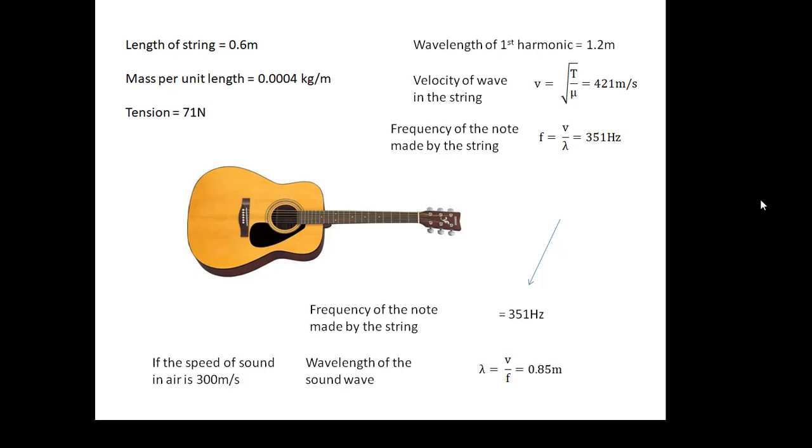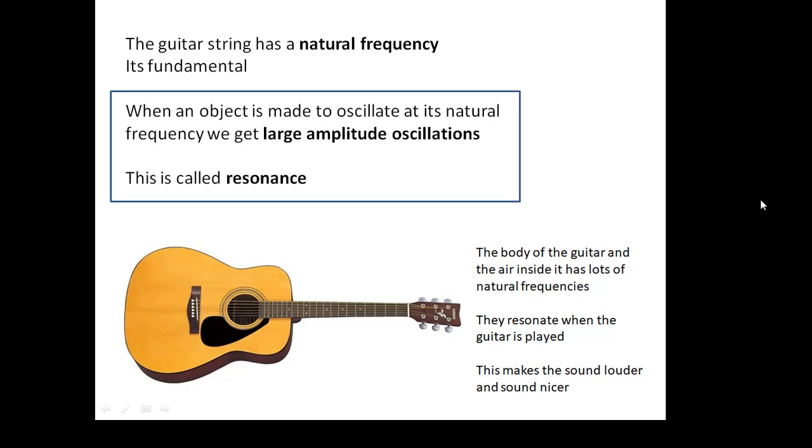The guitar string has a natural frequency - its fundamental frequency, its first harmonic. It likes to oscillate at that frequency. If you bang a guitar, it will oscillate at that frequency. Now, when an object is made to oscillate at its natural frequency, we get large amplitude oscillations, and that's called resonance. If you push a kid on a swing at just the right frequency, they'll go higher and higher - they will resonate. When an object is made to oscillate at its natural frequency, we get large amplitude oscillations. This is called resonance.